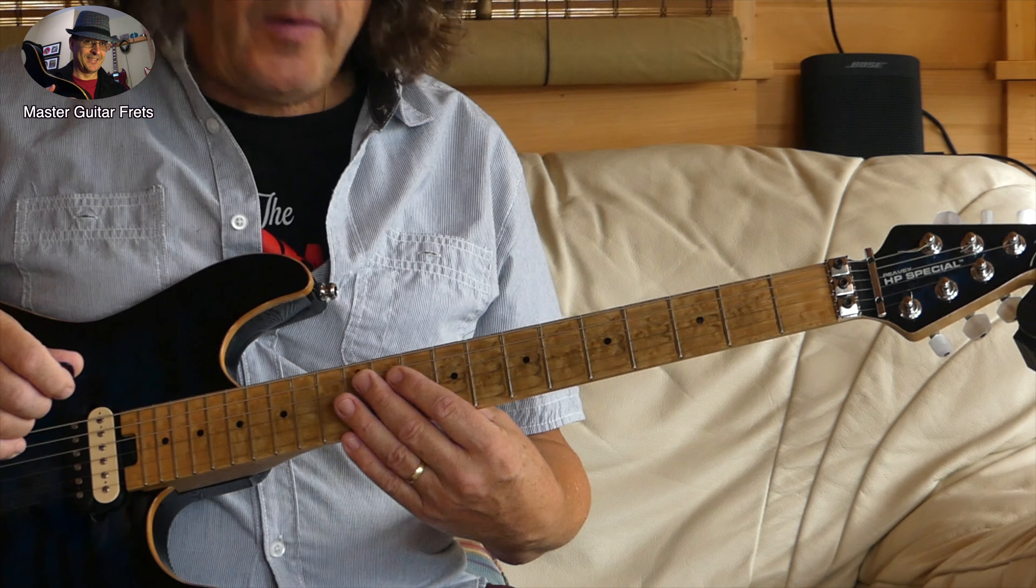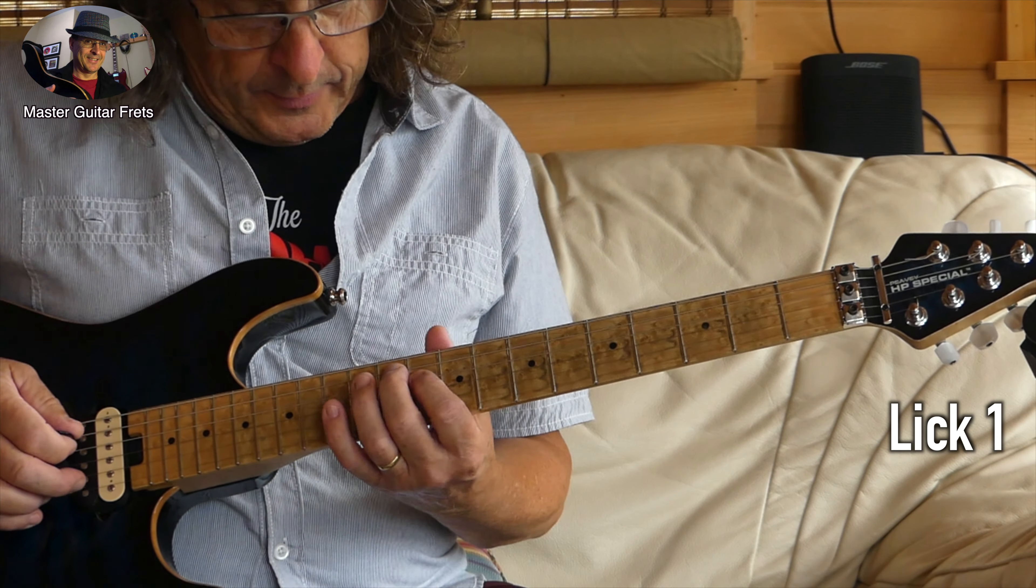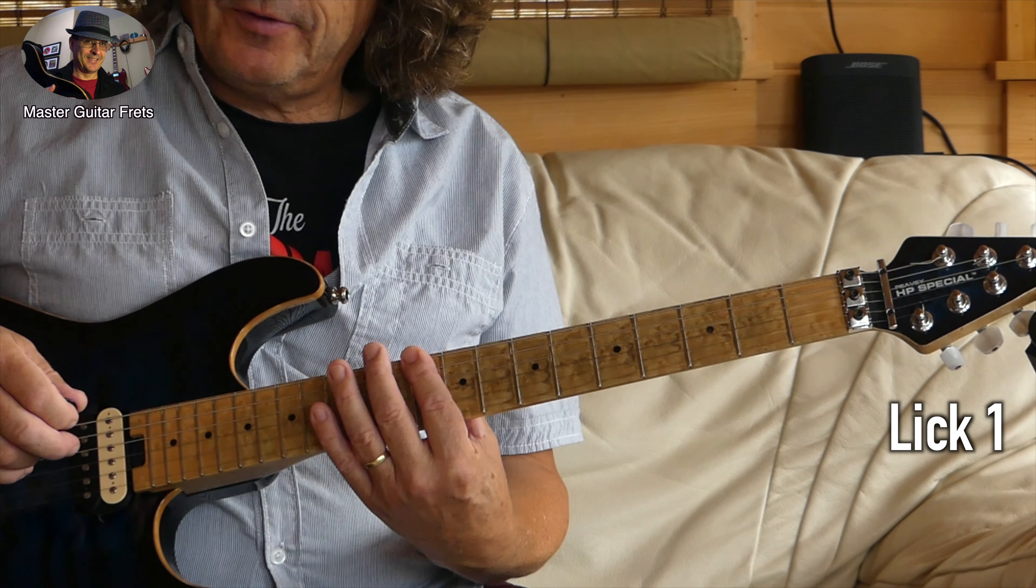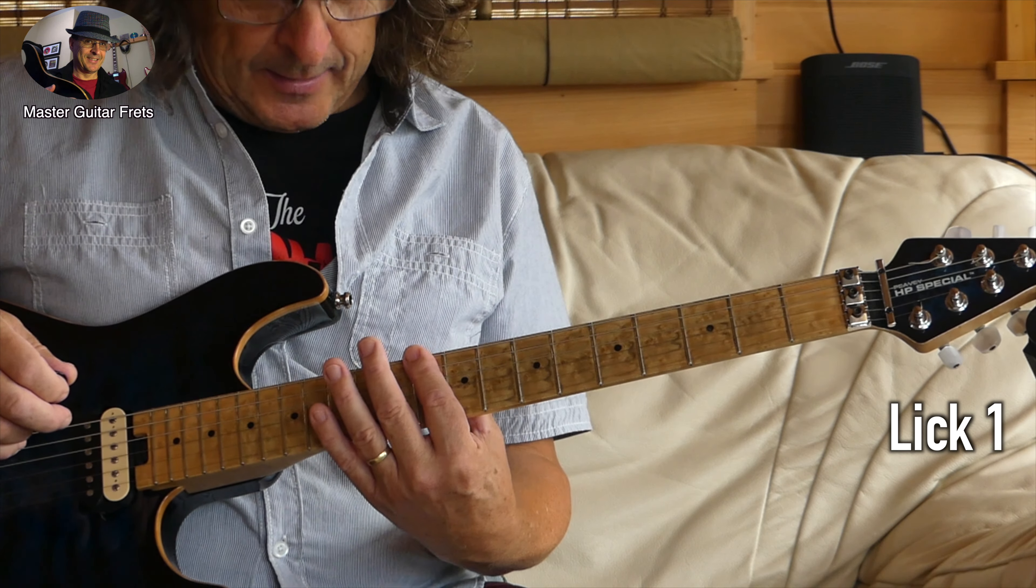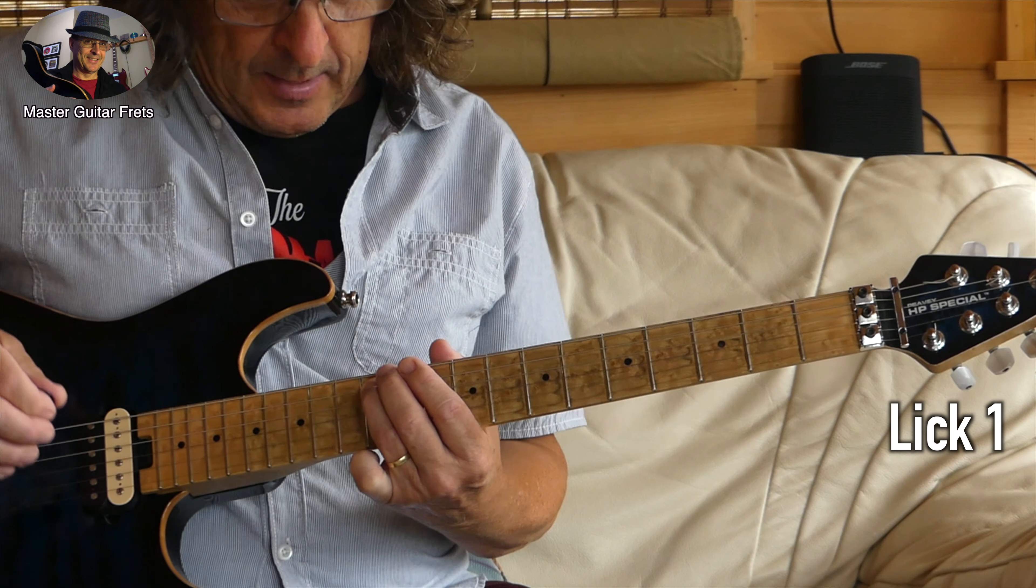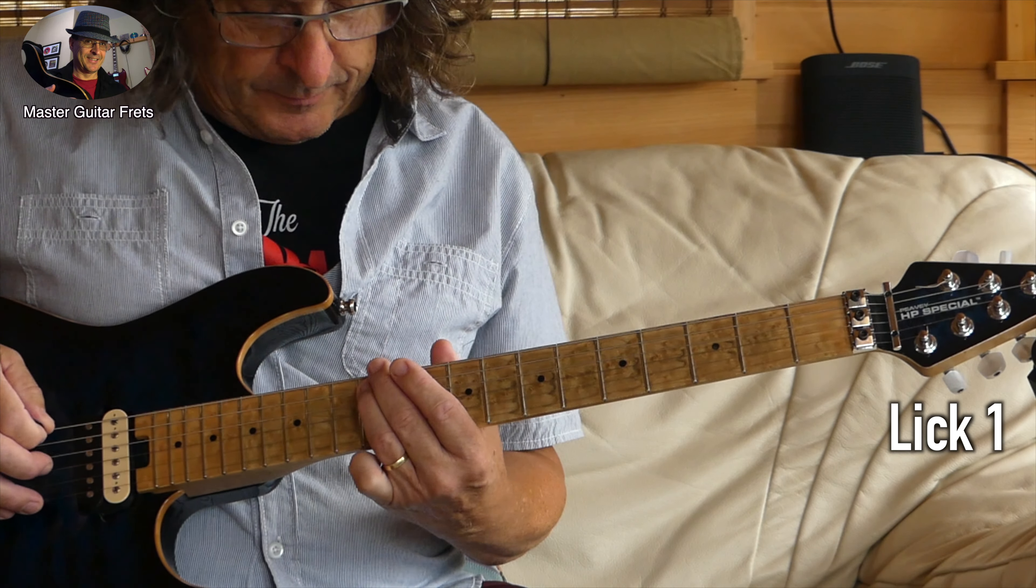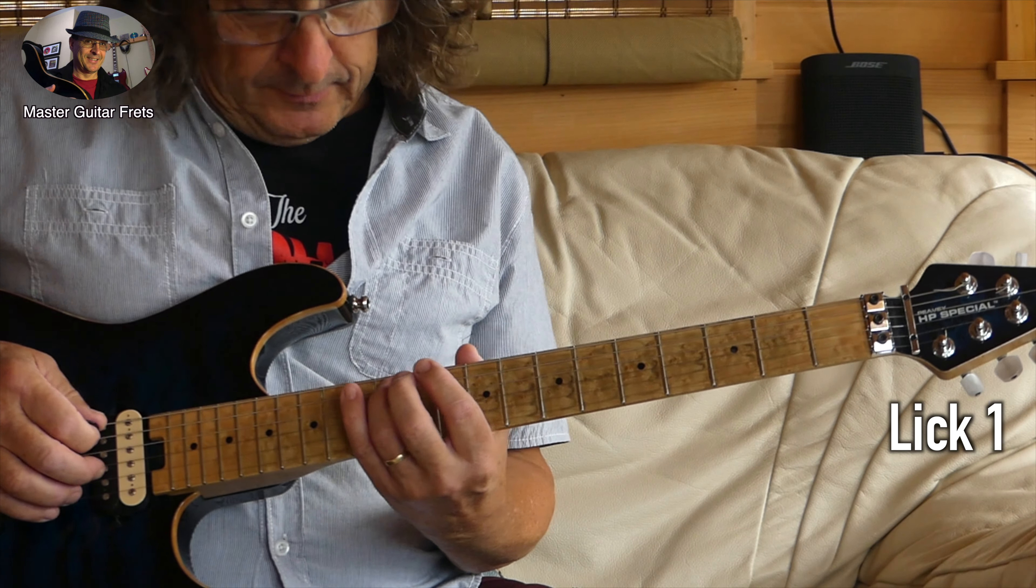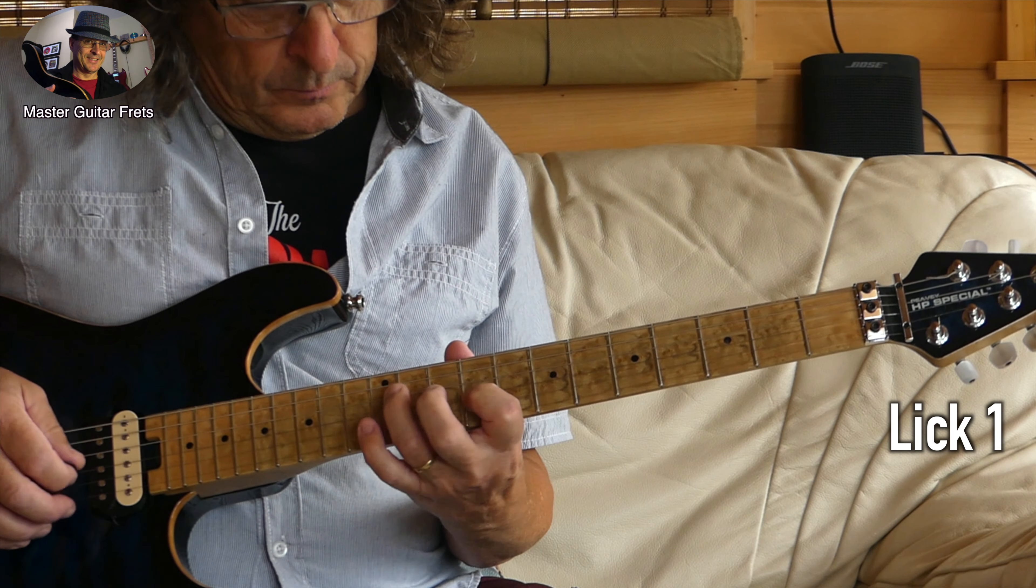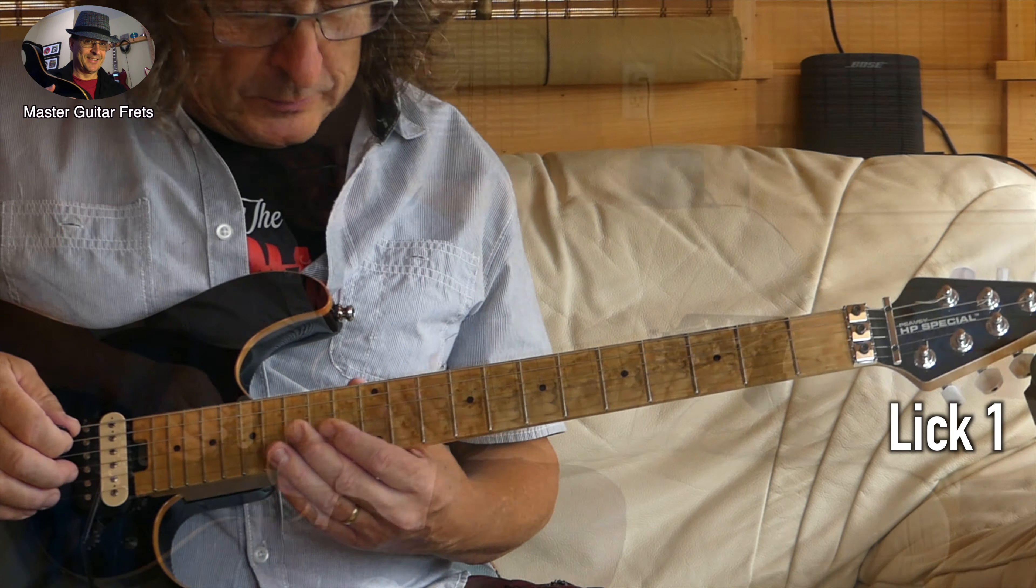So lick one—this is lick one—we're down here and this is the third position of the Phrygian scale. Here's the root A on the 12th fret, obviously A string, it's an octave right. The scale goes like this, so lick one goes like this.